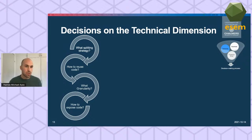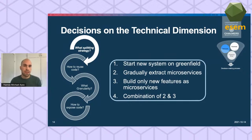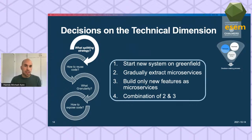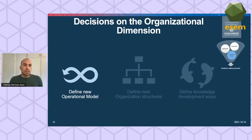We also saw a set of decisions more technical in nature, for example the splitting strategy: should we split our code, how to reuse code, what granularity, how to expose code. For the splitting strategy decision, we saw organizations choose to start a new system on greenfield — essentially having two systems in development and then phasing out the old monolith in a big bang; others chose to gradually extract microservices from the monolith; and a third option was to build only new features as microservices and keep the old part of the system.